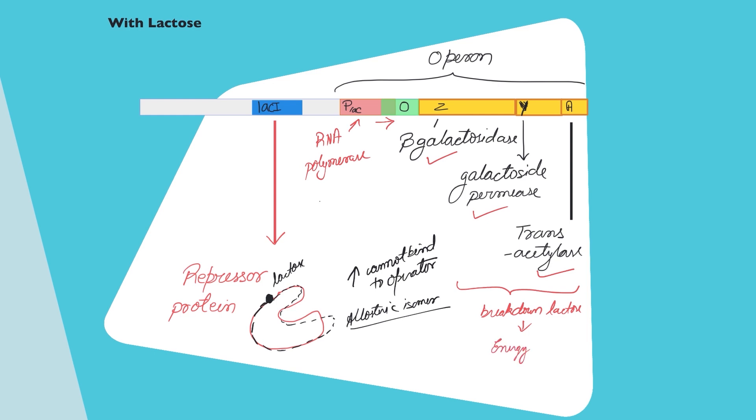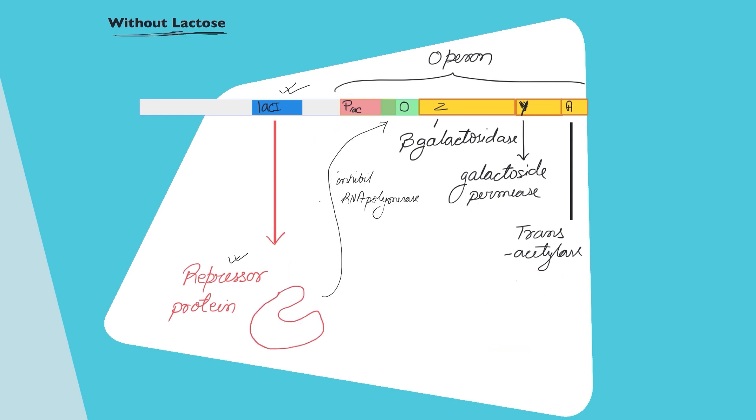So, I hope the components of this operator and how it functions are clear to you. Now, a key thing about the way the repressor is acting here also needs to be understood because this is an example of negative control.